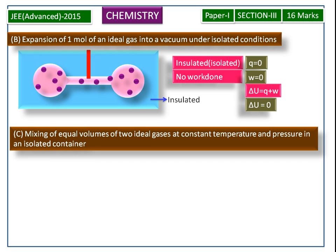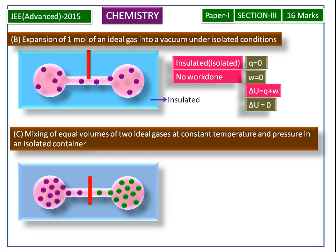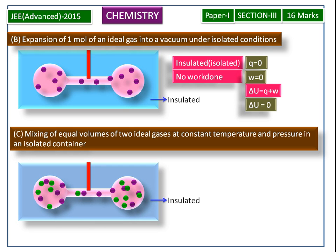Next we see the C process: mixing of equal volumes of two ideal gases at constant temperature and pressure in an isolated container. Let us consider two containers separated by a stopcock valve, each having equal volumes of ideal gases. These containers are surrounded by insulated material. When we open the valve, the gas molecules in each container move towards the other container until equilibrium is reached.